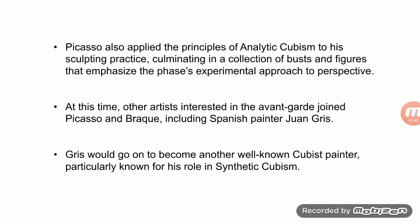Picasso also applied the principle of Analytical Cubism in his sculpting practice, culminating in a collection of busts and figures that emphasize his experimental approach to perspective. Other artists interested in the avant-garde, drawn to Picasso and Braque, include Spanish painter Juan Gris, who would go on to become another well-known Cubist painter, particularly known for his role in Synthetic Cubism.